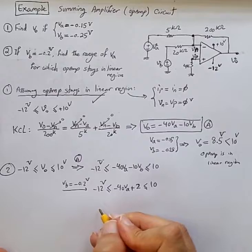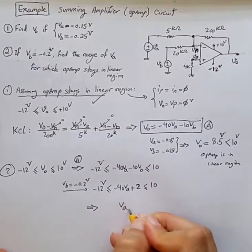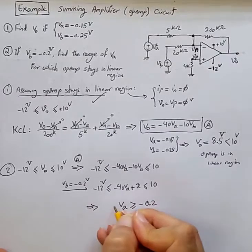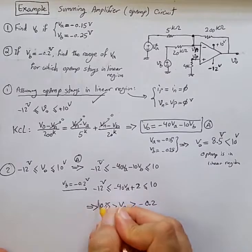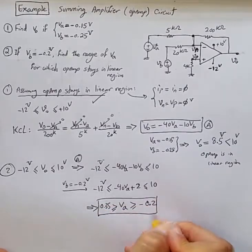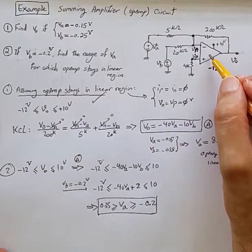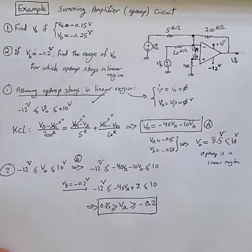So from this, we can conclude that VA is more than or equal to minus 0.2 volts and less than or equal to 0.35 volts. So that is the acceptable range for VA so that the op-amp stays in linear region of operation given that VB is minus 0.2 volts.